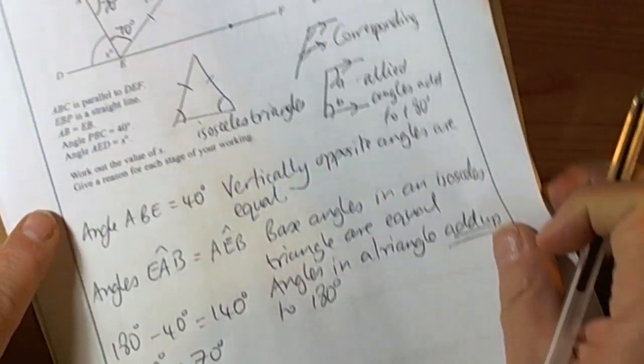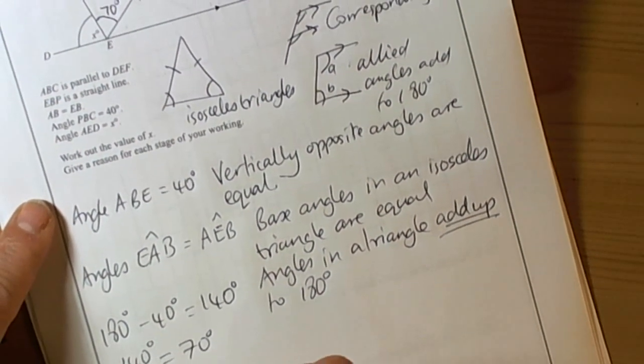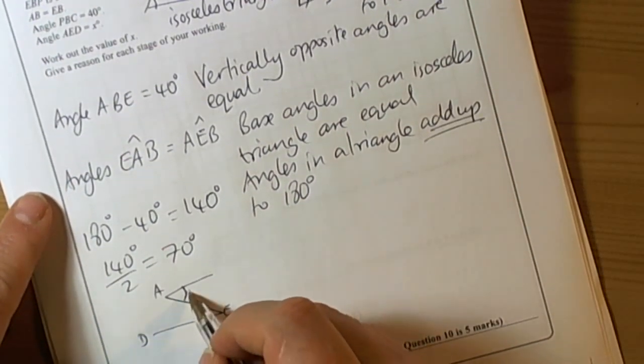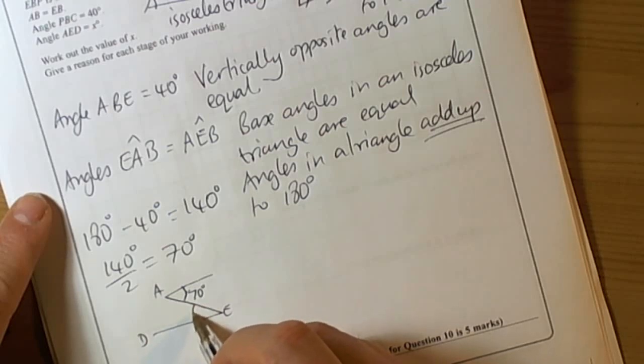So we actually have this picture going on, where that was A, E and D. We've already shown why this one is 70 degrees.